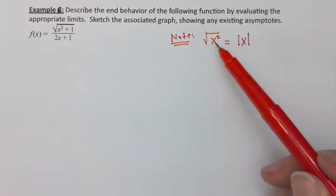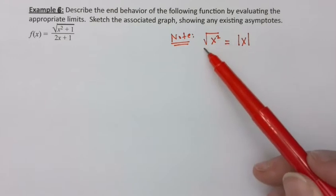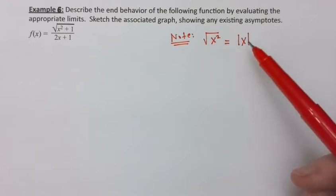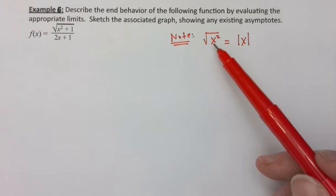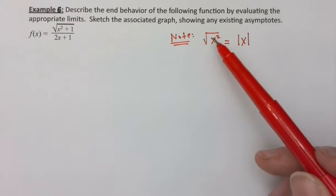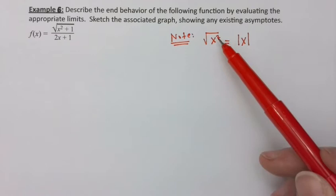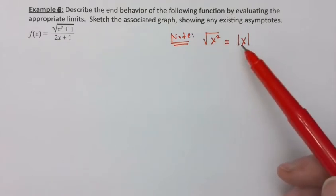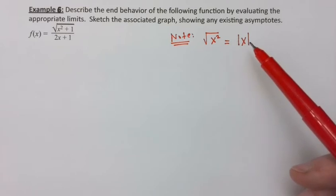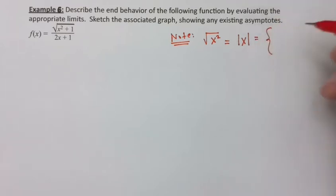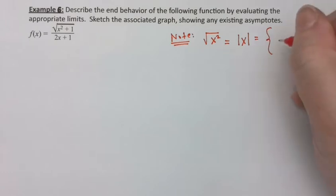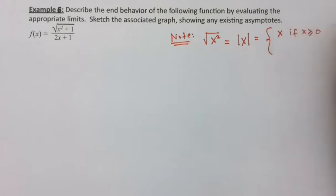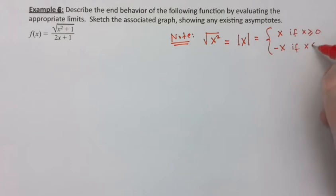For example, if I take 2 and square it, that gives me 4, and the square root of 4 is 2 — no problem. But what if it was negative 2? When you take negative 2 and square it, you get 4. So the square root is not x, it's the absolute value of x — it's always turning it positive. The absolute value of x is defined as x if x ≥ 0, and negative x if x < 0.